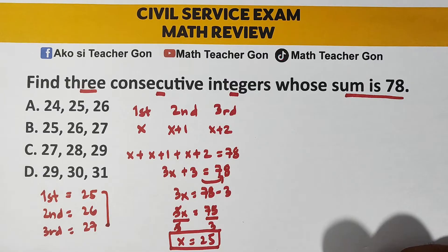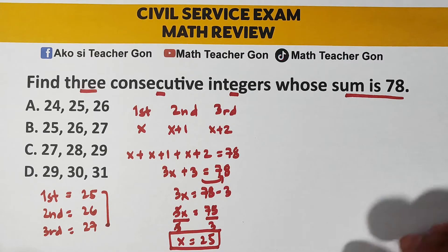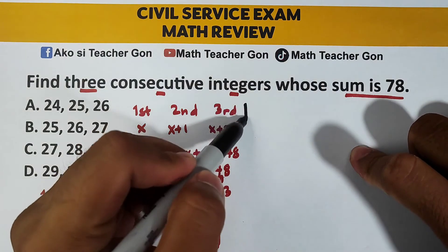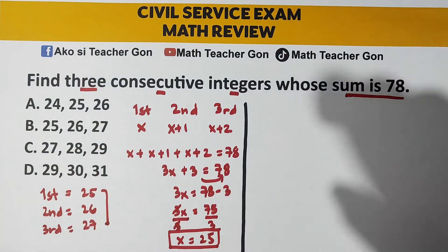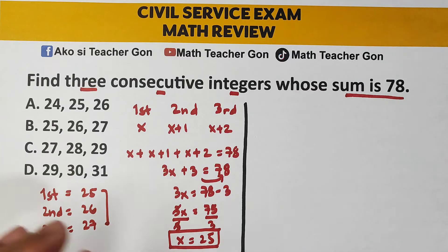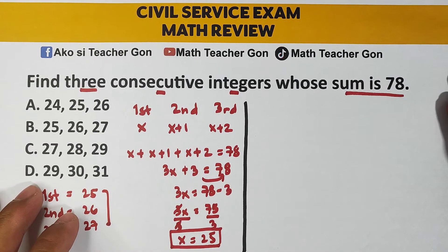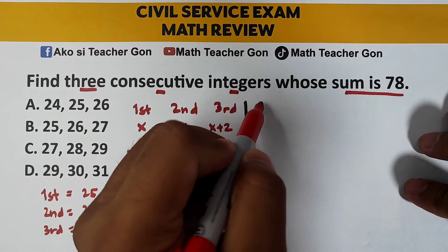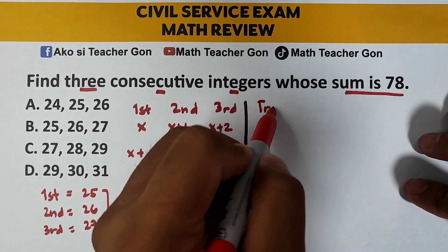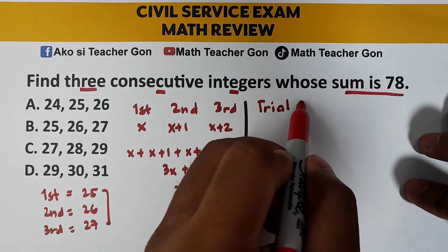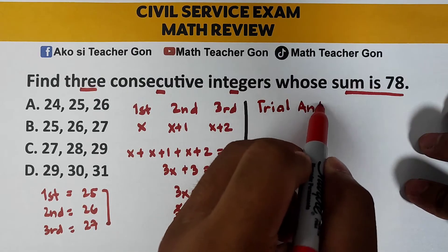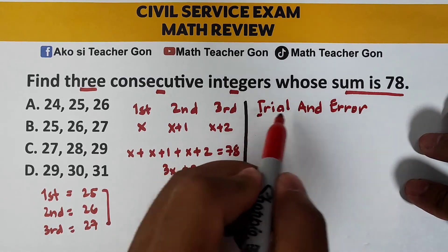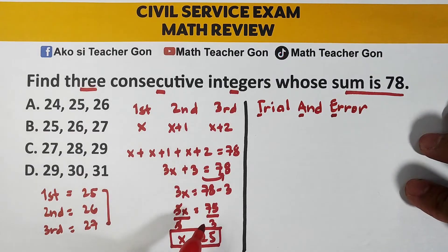You can add them up, guys. So, ngayon, what is the other possible solution na pwede natin magamit, to make it faster or to solve it faster? Gagawin nyo dito, guys. You can use the trial and error method. Trial and error. T-A-E. Trial and error method.